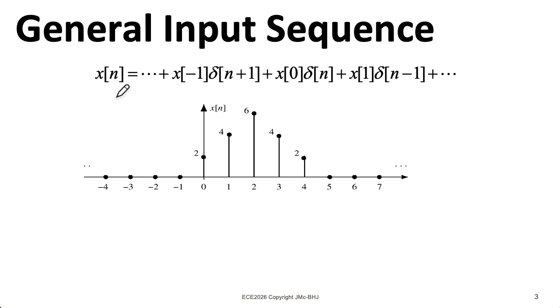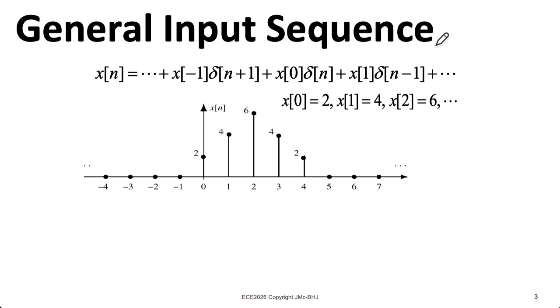Let's think about writing some generic signal x of n in terms of direct delta functions in different positions times coefficients. So in this particular example, x0 is 2, so I would have 2 here. x1 is 4, so I would have 4 here. And so on.